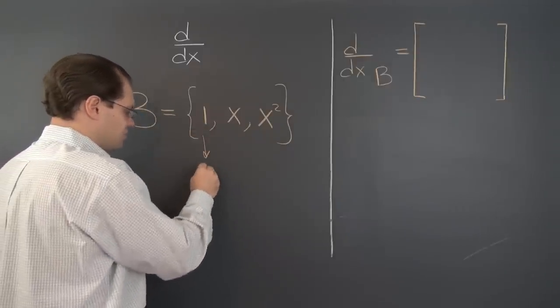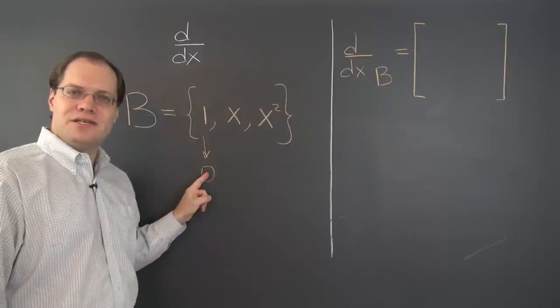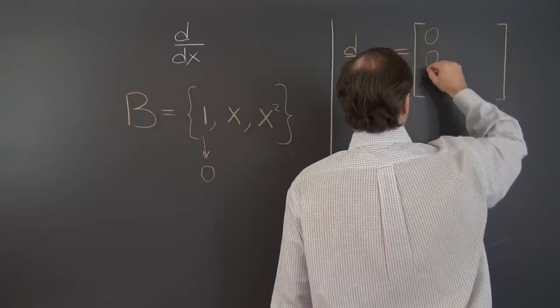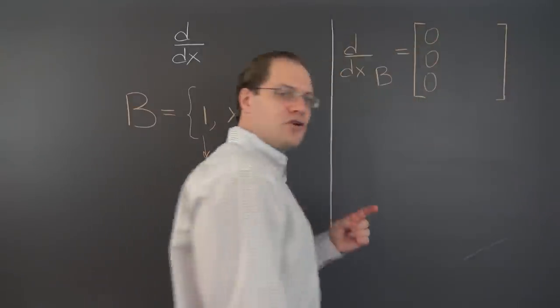One goes to zero, the zero polynomial. And the components of the zero polynomial with respect to this basis, or any other basis for that matter, are all zeros. So that's the first column.